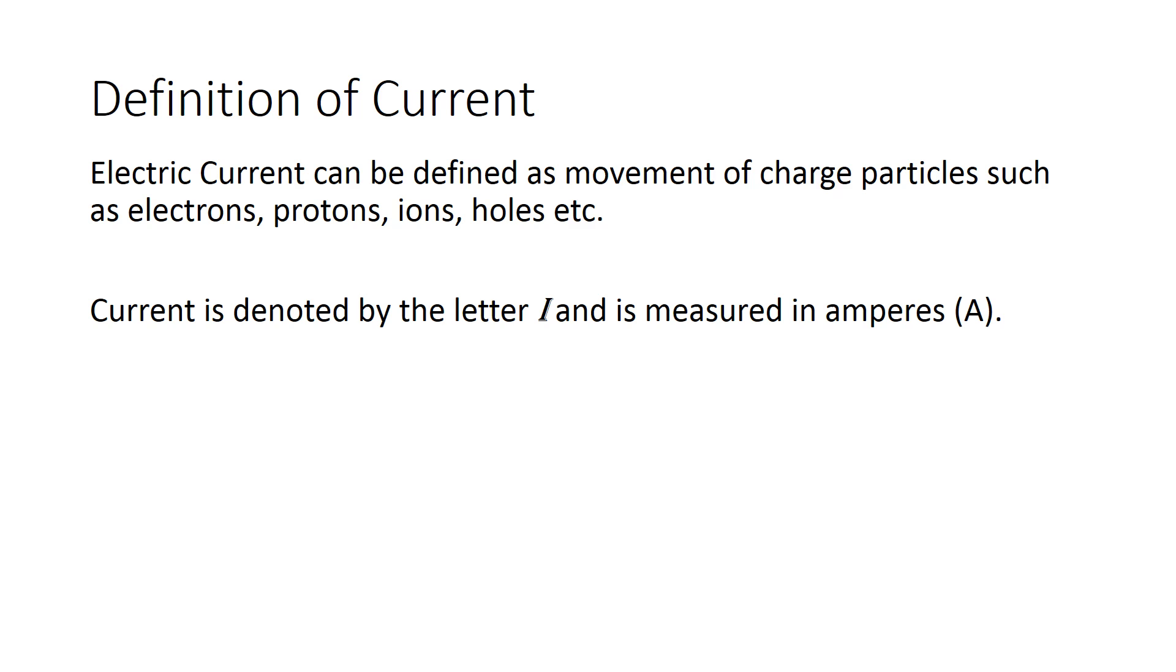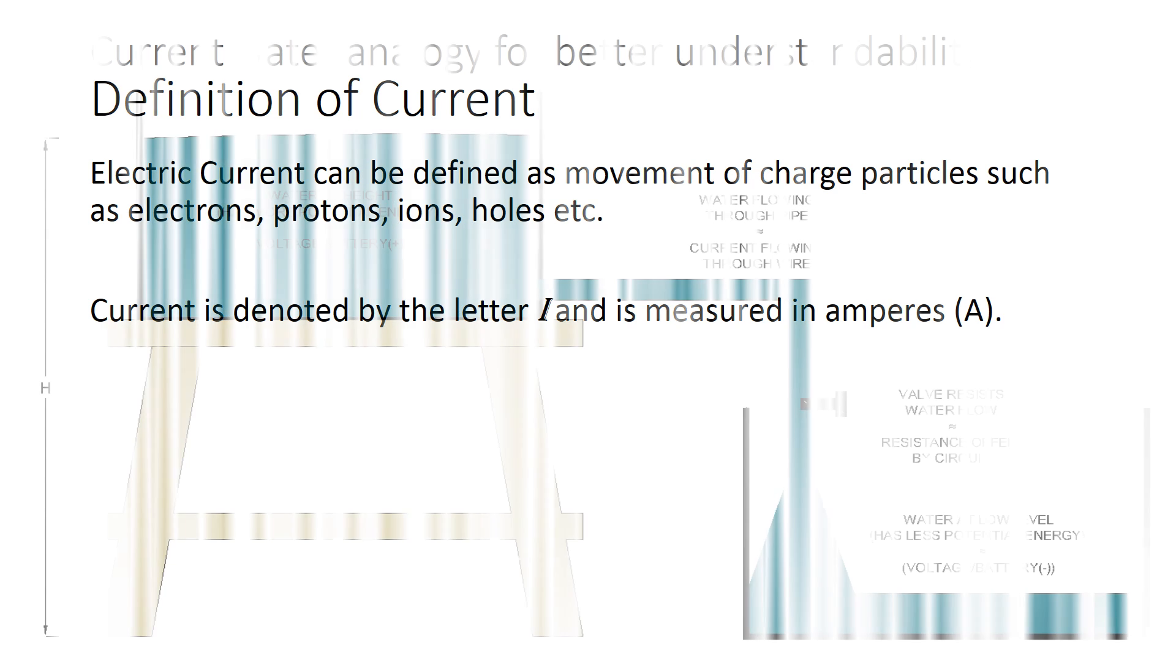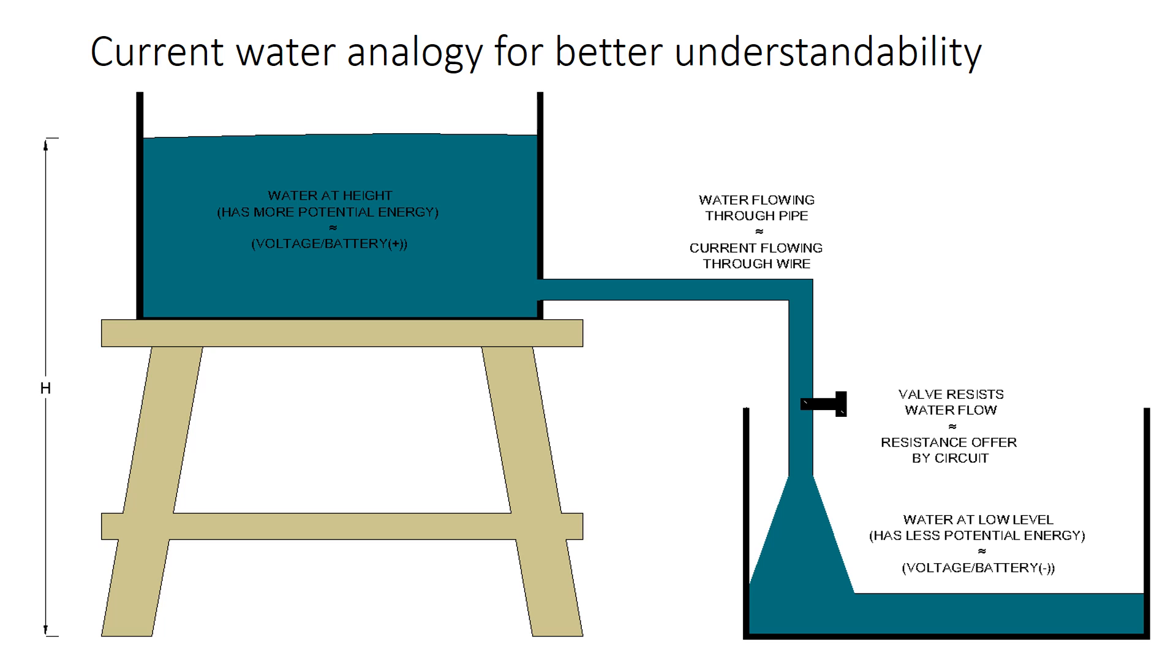Current can be defined as movement of charged particles such as electrons, protons, ions, holes, etc. Current is denoted by the letter I and is measured in amperes. The concept of current can be clearly understood by comparing it to the flow of water in a pipe.